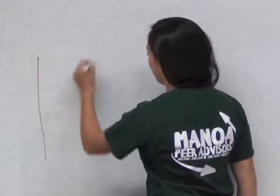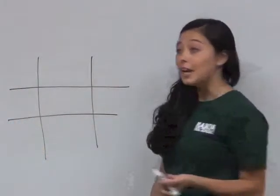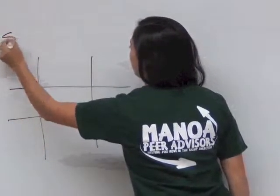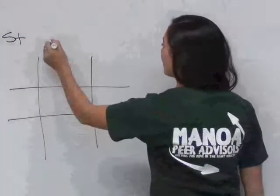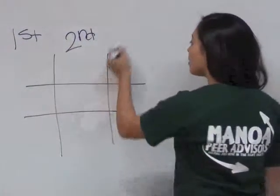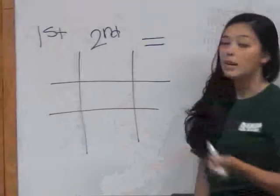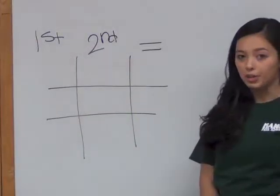To do so, I'm going to go through a couple of scenarios. Now in my diagram, this first column will represent the first time a student takes a course. The second column will represent the second time, and the third column will represent how it affects your Manoa GPA and what will show up on your transcript.